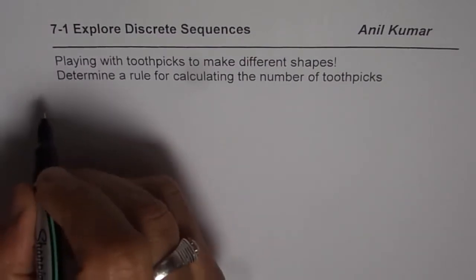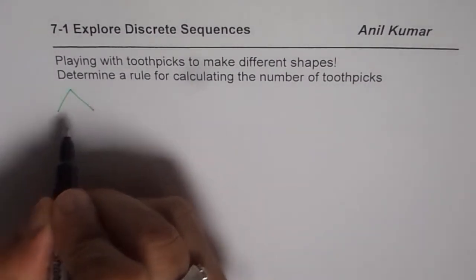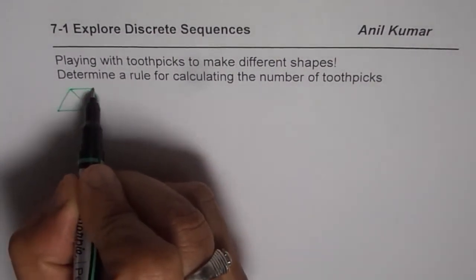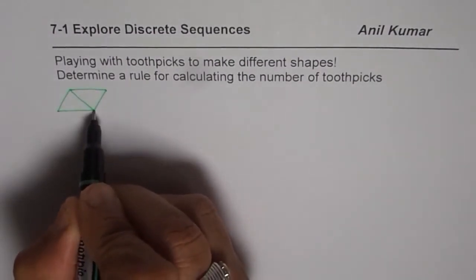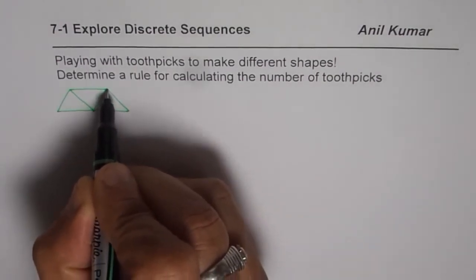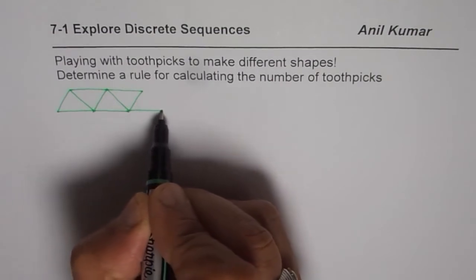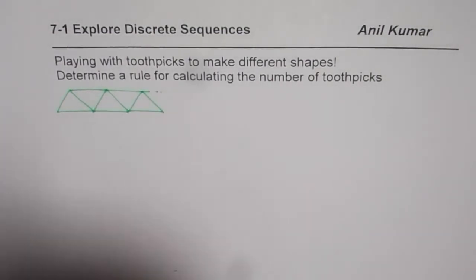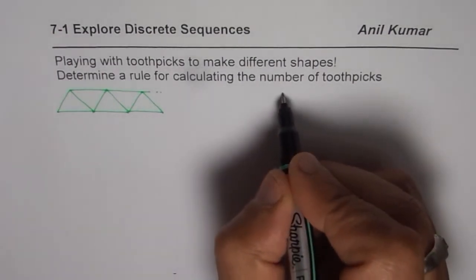So let us begin by making triangles. We place the toothpicks in this order — we make one triangle and then place two more on the side to make the next triangle and continue this pattern. This is a discrete pattern because the number of toothpicks are always natural numbers.